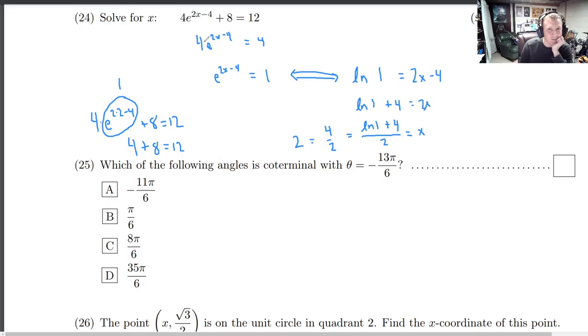Okay. You could almost see this by inspection right away from the beginning. Okay, 25. Which of the following angles is coterminal with negative 13 pi over 6? Okay.